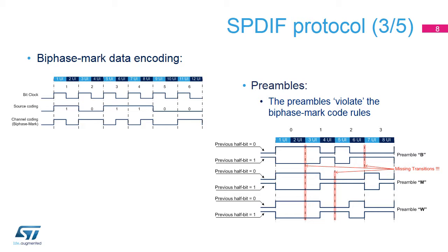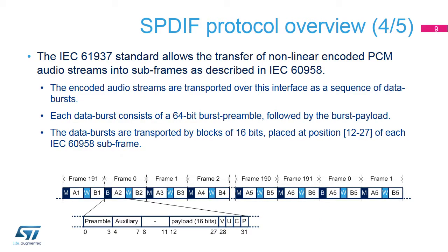The digital audio data are coded using biphase mark encoding as shown in the upper figure. Note that with biphase mark encoding, there is a transition at the boundary of each bit. The preamble length is 4 bits, and some transitions on the preamble do not respect biphase mark encoding — this is used by SPDIF receivers to easily detect the block and subframe boundaries. UI means unit interval and represents the shortest nominal time interval in the coding scheme. Bits 4 to 27 of each subframe can also be used to transfer encoded audio signals, as described in IEC-61937.